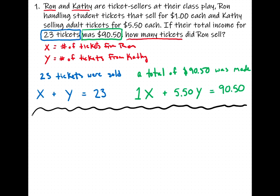That's phase one of the problem. Now we have a system of equations: x + y = 23, and x + 5.50y = 90.50. Now it's no longer a word problem — it's a system of equations. We've talked about two methods for solving a system: substitution and elimination.